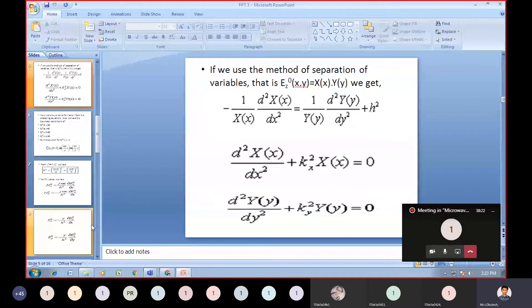If we use the method of separation of variables, E_z of (x,y) equals X(x) times Y(y). From that, we will get the expression where on this side we have only X terms, and on this side we have only Y terms.